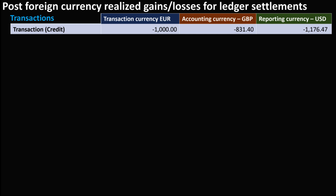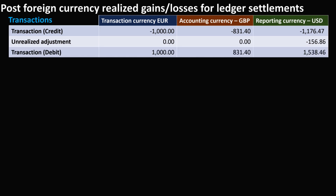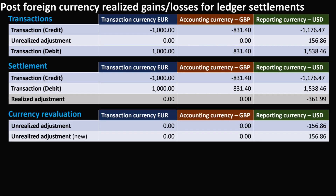Consider an example where a credit transaction is recorded in Euro as the transaction currency, with GBP as the accounting currency and USD as the reporting currency. After running a currency revaluation, an unrealized currency adjustment occurs. Subsequently, a debit transaction is posted. When it comes to the settlement phase and the pairing of the debit and credit transactions, a discrepancy in reporting currency balance between the debit and credit becomes evident. In such a scenario, the system will automatically post a realized adjustment.